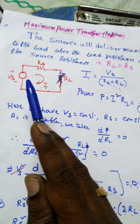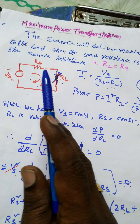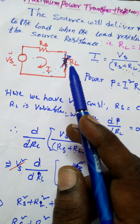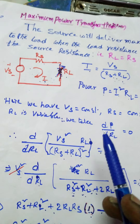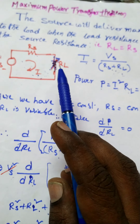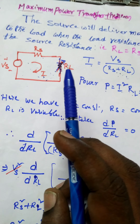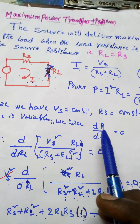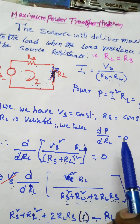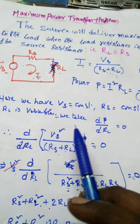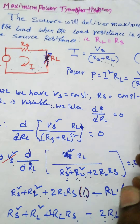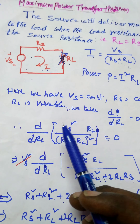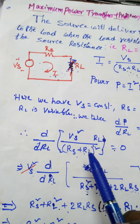To calculate the maximum power delivered to the load: VS is constant, RS is constant and fixed, and the load resistance RL is variable. The condition for maximum power delivered to the load is found by differentiating the power with respect to RL and setting it to zero: dP/dRL equals zero. Substituting our power expression gives d/dRL of [VS squared divided by (RS plus RL) squared times RL] equals zero.